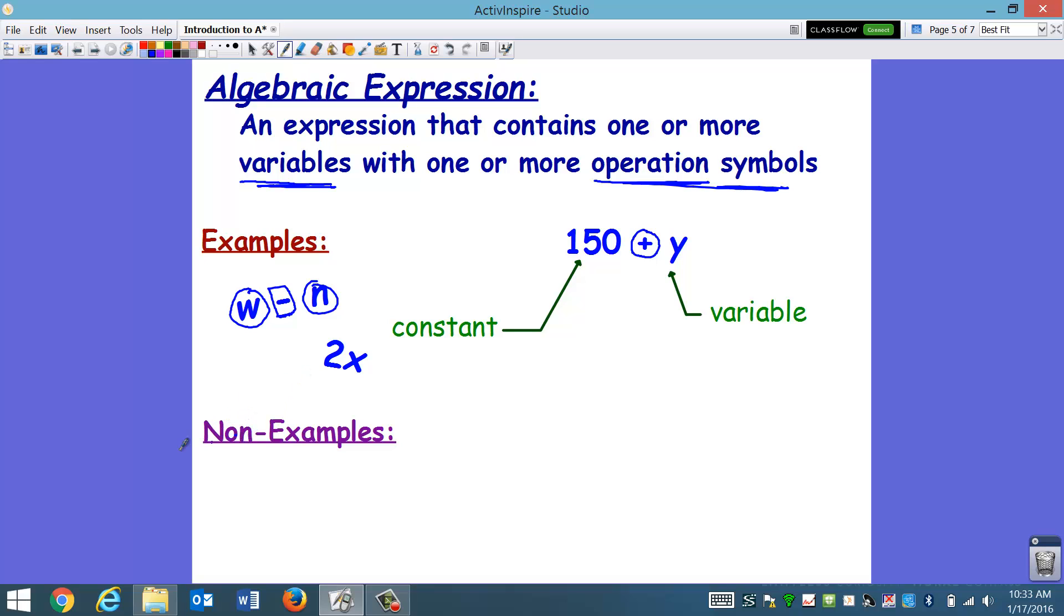So what about some non-examples? Well, 12 minus 7. This is what we call a numerical expression. It has an operation. And it has two numbers. But there is no variable. So it is not an algebraic expression. It's just a regular numerical expression. 15. Well, there is no operation. It's just a number or a constant. So it is not an expression. And this one over here. 9 divided by 16. Okay. Yes, the fraction bar means division. But there is no variable. Therefore, it is not an algebraic expression.